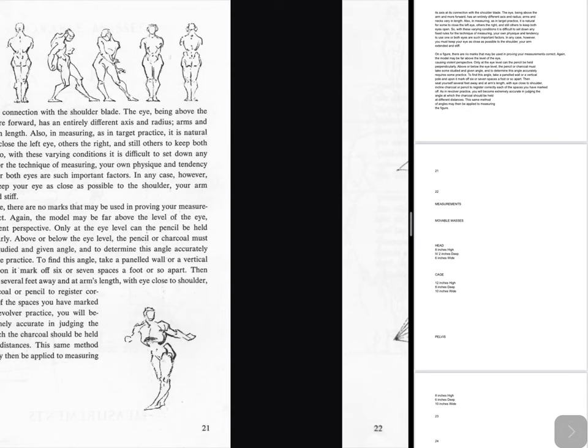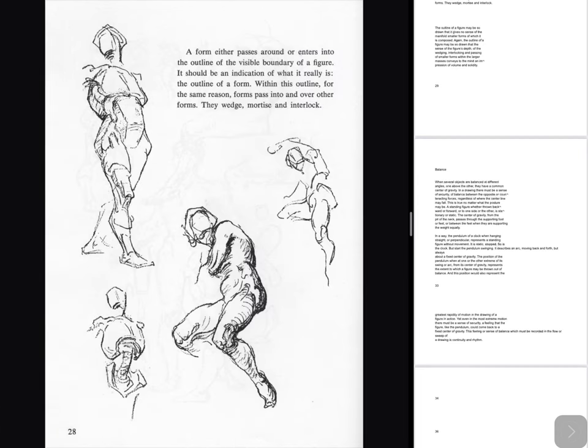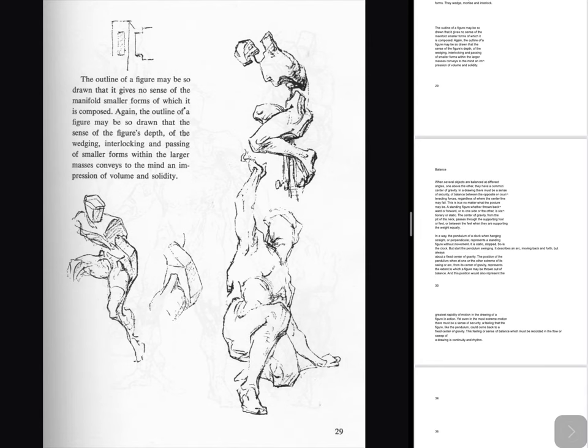A form either passes around or enters into the outline of the visible boundary of a figure. It should be an indication of what it really is — the outline of a form. Within this outline, forms pass into and over other forms. They wedge, mortise and interlock. The outline of a figure may be so drawn that it gives no sense of the manifold smaller forms of which it is composed. Again, the outline of a figure may be so drawn that the sense of the figure's depth, of the wedging, interlocking and passing of smaller forms within the larger masses conveys to the mind an eye impression of volume and solidity.